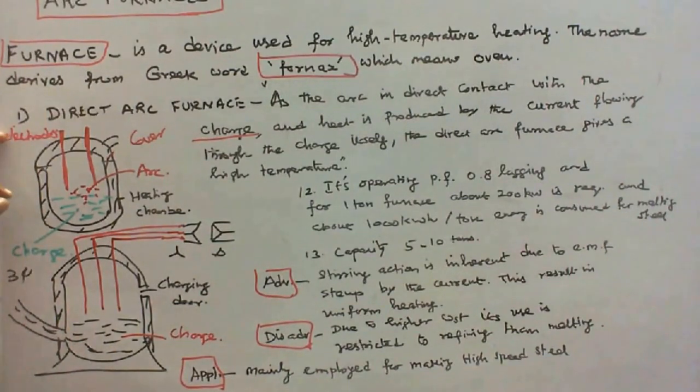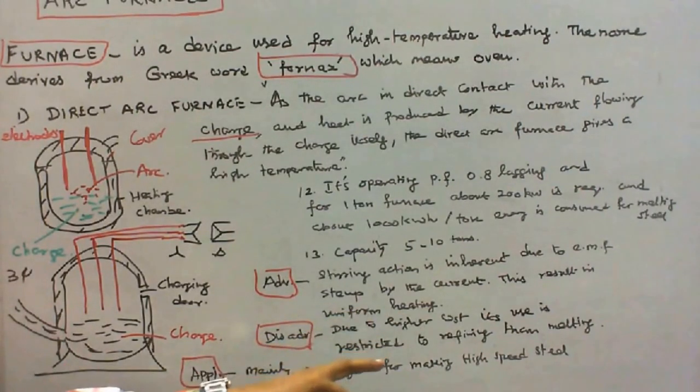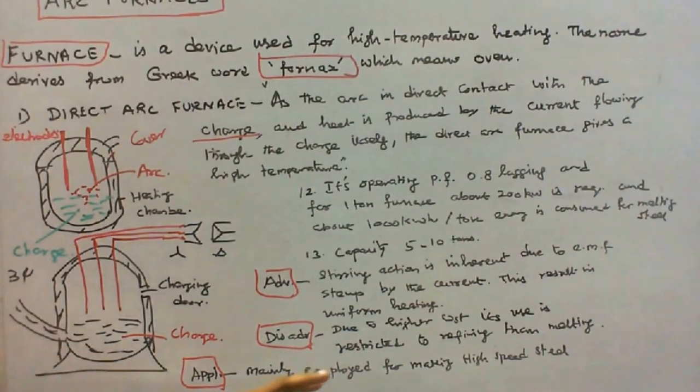The main disadvantage of this furnace is due to higher cost. Its use is restricted to refining than melting. The main application of this furnace is mainly employed for making high-speed steel.